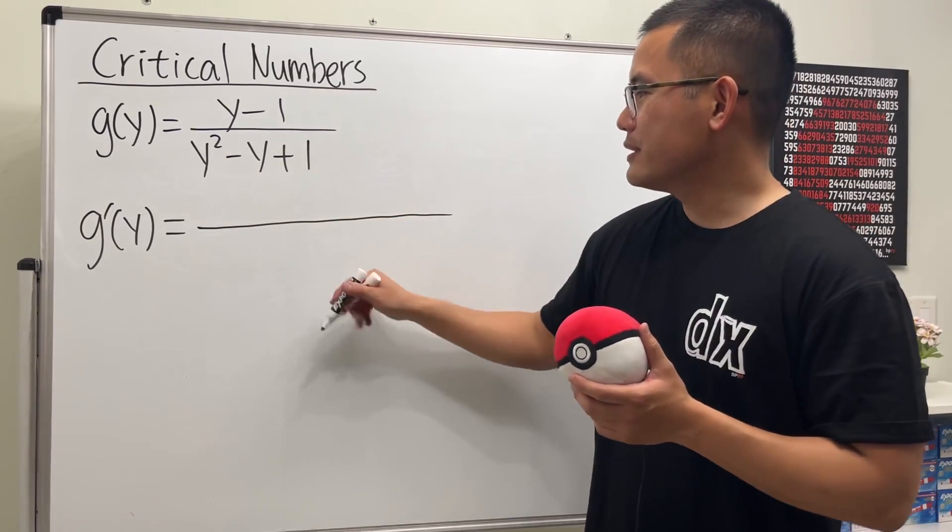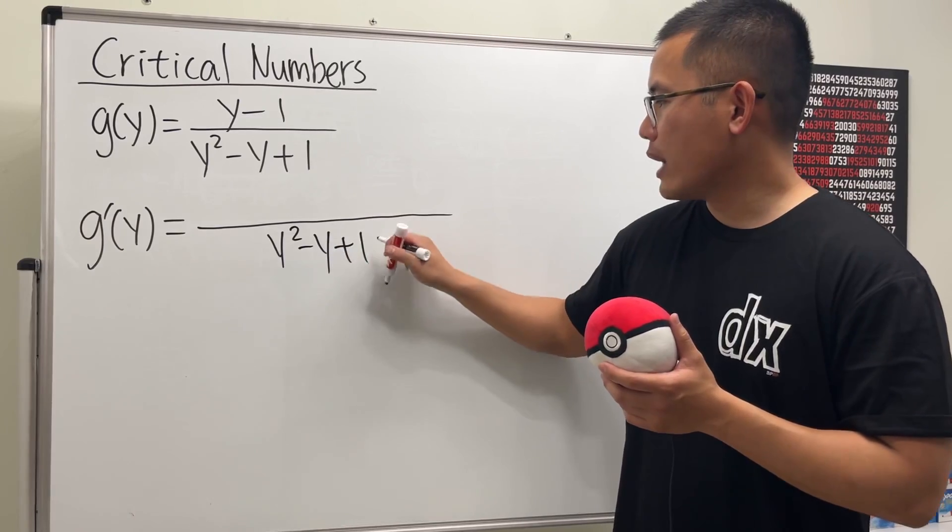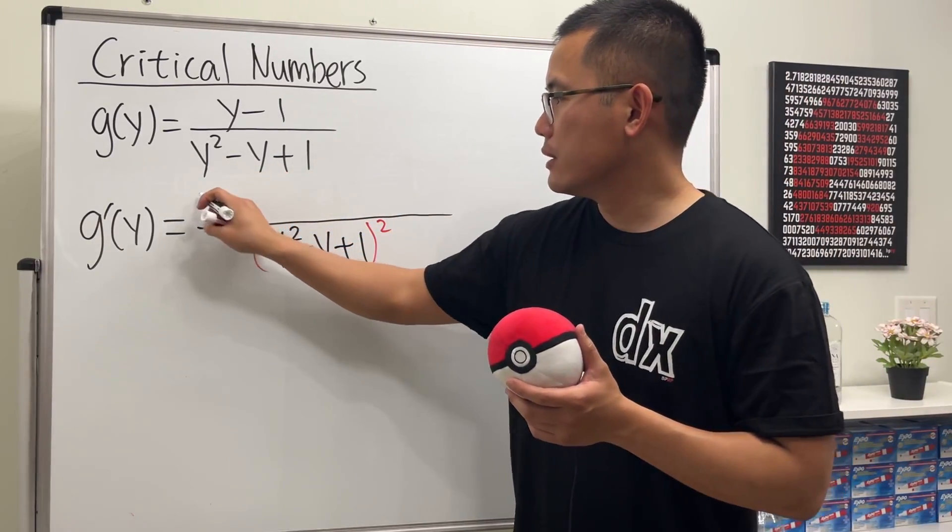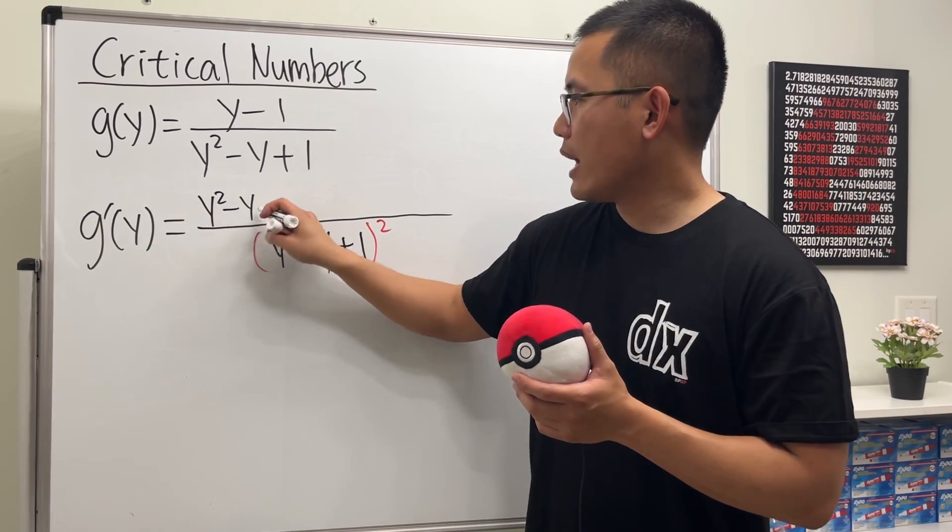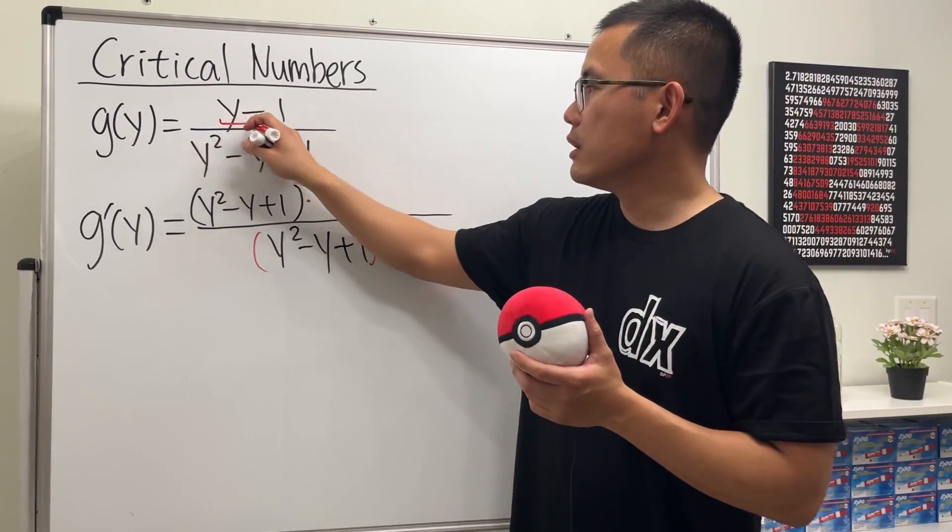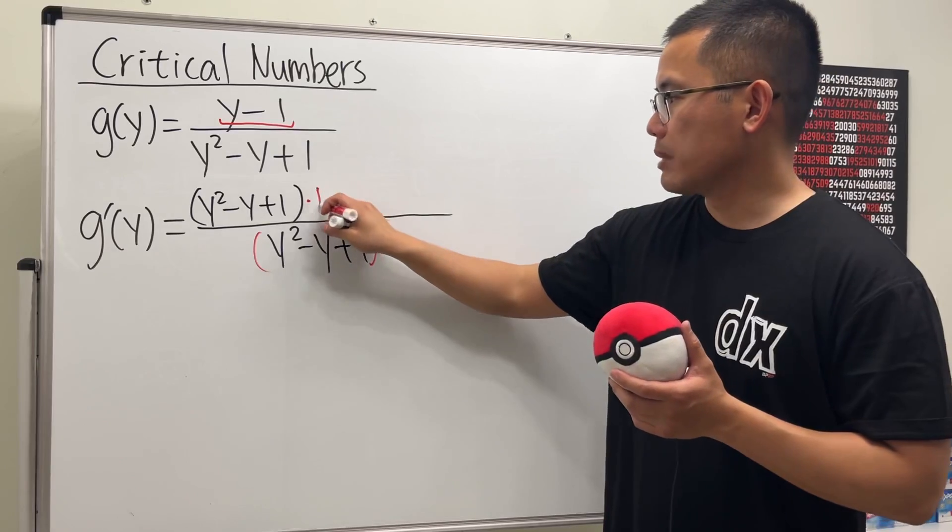We are going to square the bottom first. So, we have y squared minus y plus 1, and then square. And then we put the bottom function here first, right? y squared minus y plus 1. And then we multiply by the derivative of the top function. The derivative of y minus 1 is just 1, so just multiply by 1.